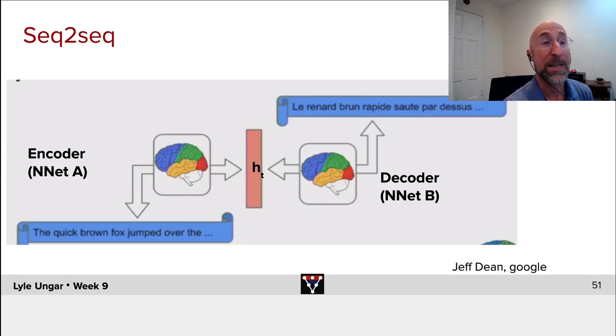This then goes into an encoder network. The network looks very much like the networks we've seen before. At the end of this network, there'll be, as usual, output of a hidden state, H of T.